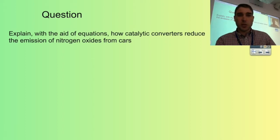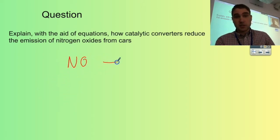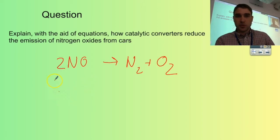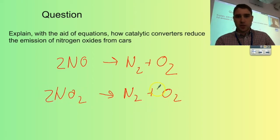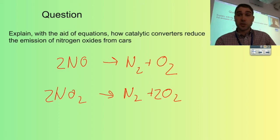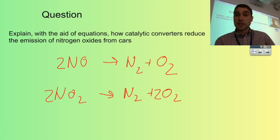Here's a question: explain with the aid of equations how catalytic converters reduce the emission of nitrogen oxides from cars. Starting with the equations: 2NO → N₂ + O₂, and 2NO₂ → N₂ + 2O₂. The catalyst in the catalytic converter reduces the activation energy for the conversion of nitric oxide to nitrogen and oxygen, and nitrogen dioxide to nitrogen and oxygen. That leads to the emission of less dangerous gases — so nitric oxide isn't emitted; nitrogen and oxygen are emitted instead.